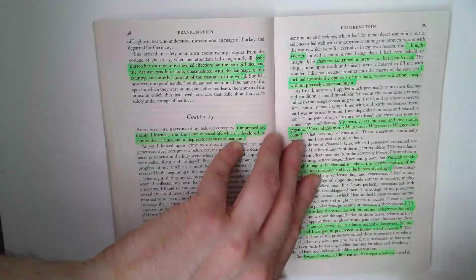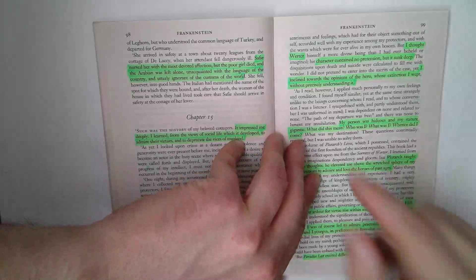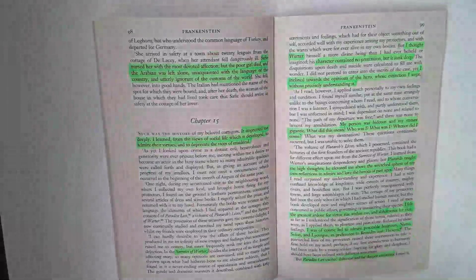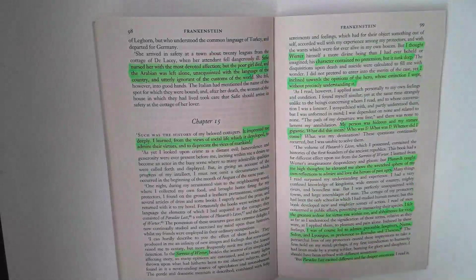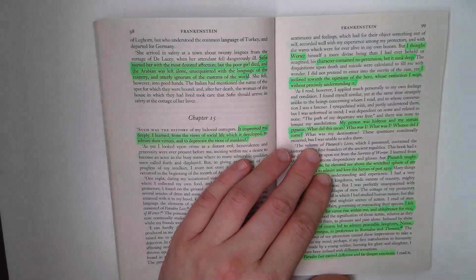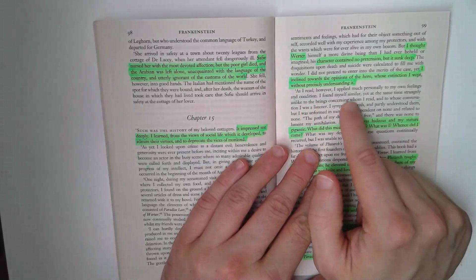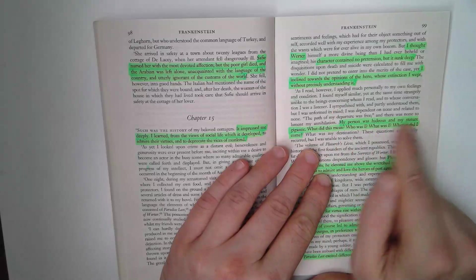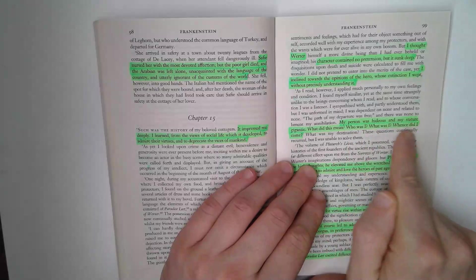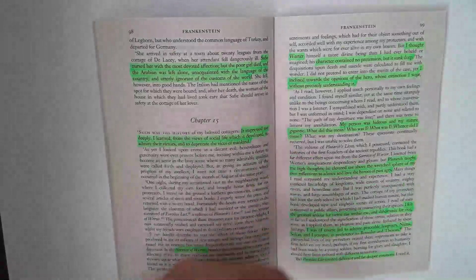When Werther dies, the creature sides with Werther really, and feels this sense of being an outsider, and being rejected by people he loves is what the creature takes away from the Sorrows of Werther. The creature starts to think about these characters in the books he reads and associates himself with them. My person was hideous and my stature gigantic. What did this mean? Who was I? What was I? Whence did I come? What was my destination? And these ideas that he can't solve these questions.